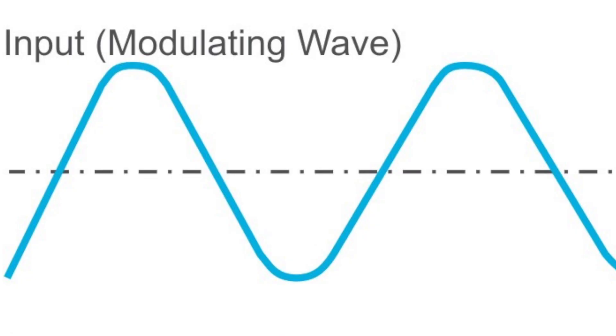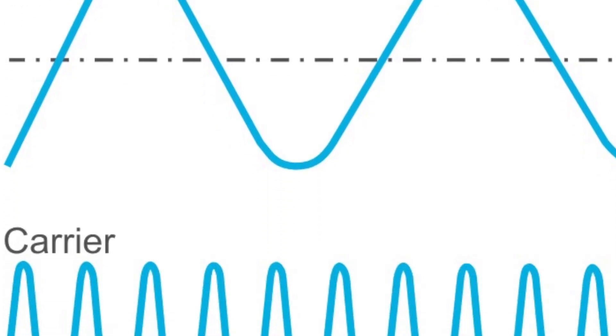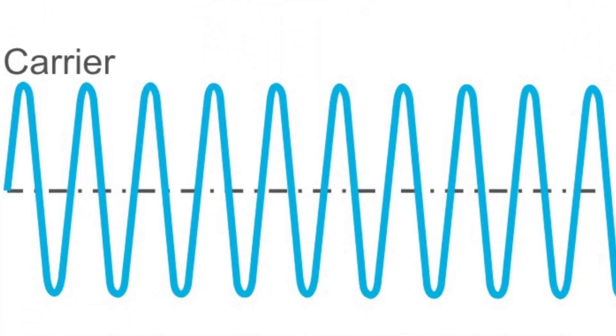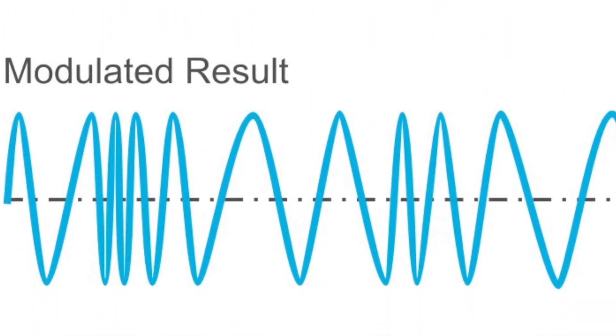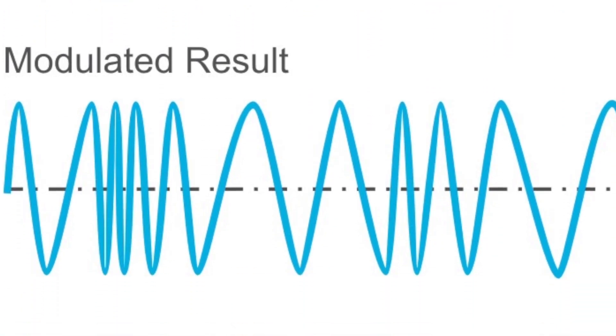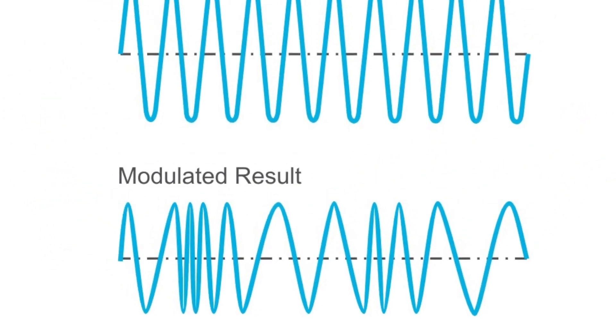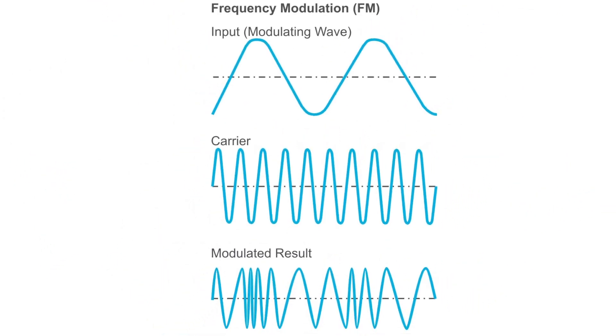Suppose that we change the frequency of an input signal. If we add this input signal to the pure carrier wave, we thereby change the frequency of the carrier wave. In that way, we can use changes in frequency to carry our speech information. This is called frequency modulation, or FM.